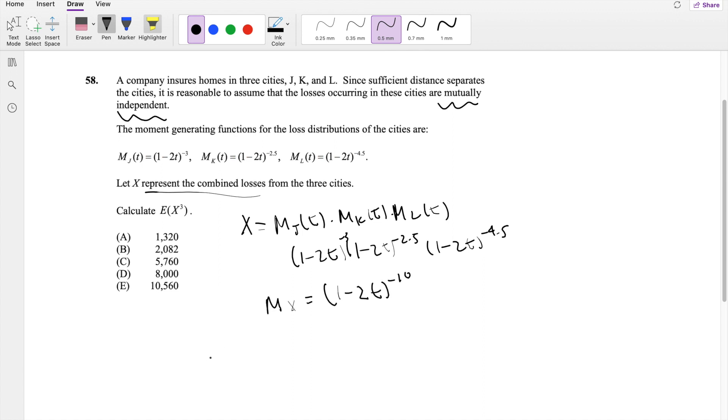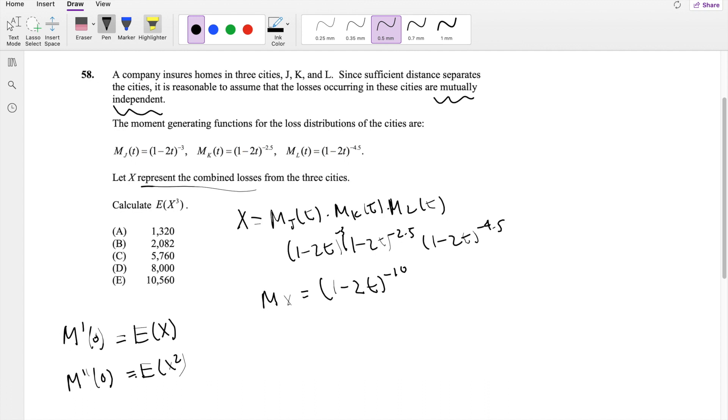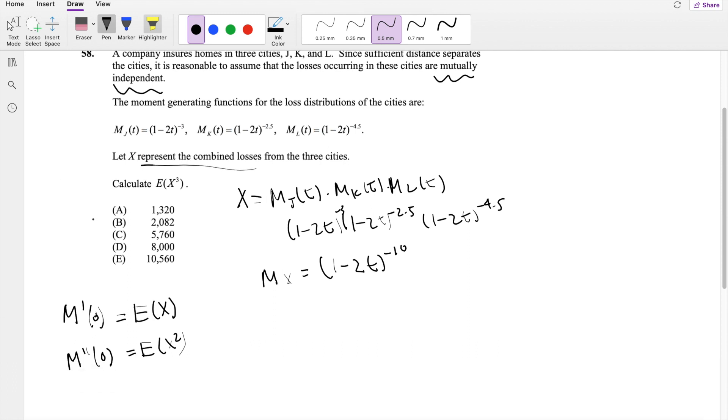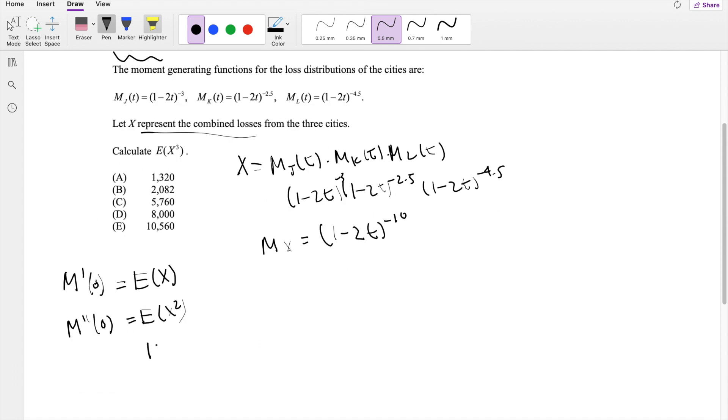What's cool about moment generating functions is that you can find, let's say, the expectation of X. This is equal to the moment generating function, the first derivative, evaluated at 0. And likewise, if you're looking for the second one, it's going to be equal to the second derivative, evaluated at 0. And lastly, the E[X^3], which is what we're looking for, is equal to the expected value of X cubed, evaluated at 0. So that's the triple derivative, setting it equal to 0.